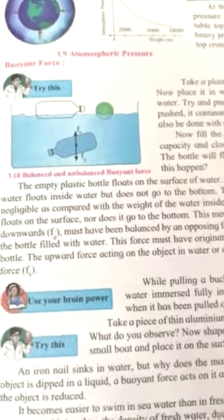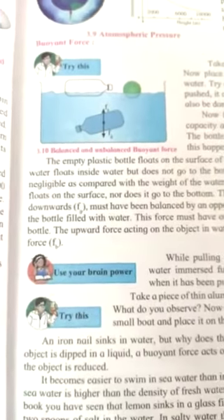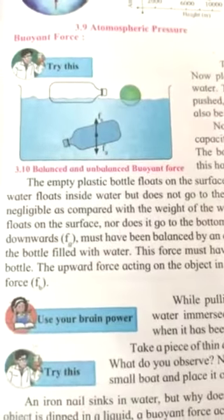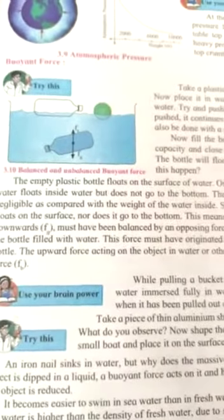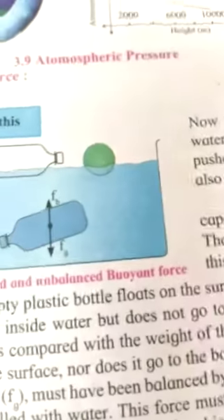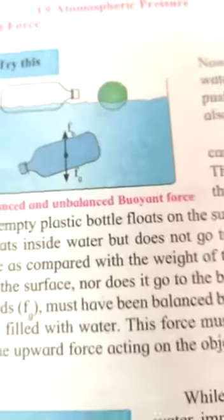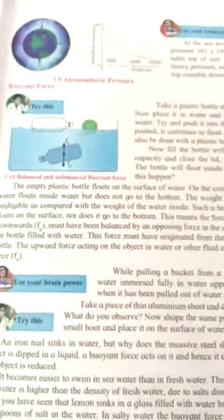Okay, so the empty bottle floats on water and the filled bottle sinks and goes to the bottom of the water. So the upward force acting on the object in water is acting on the bottle. So this force is called as buoyant force.